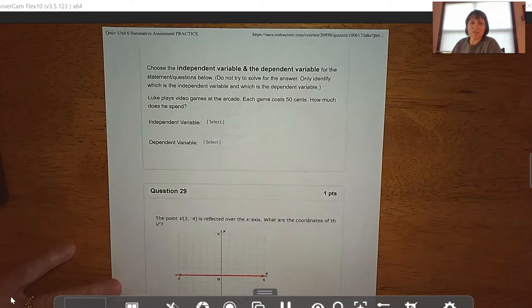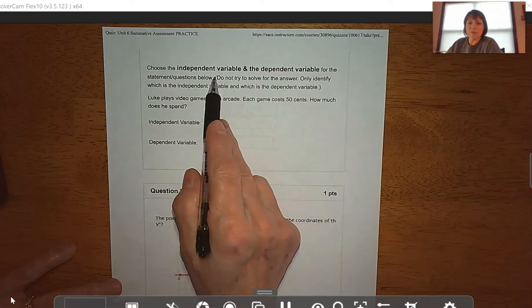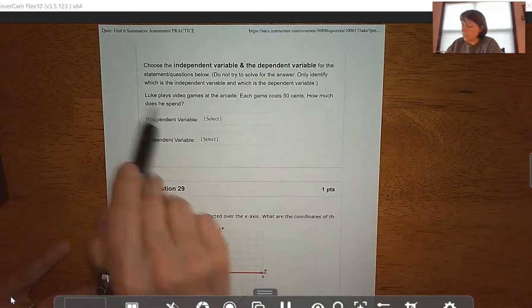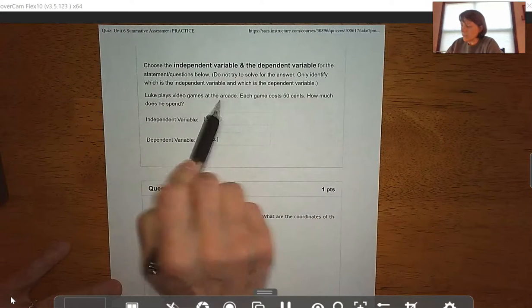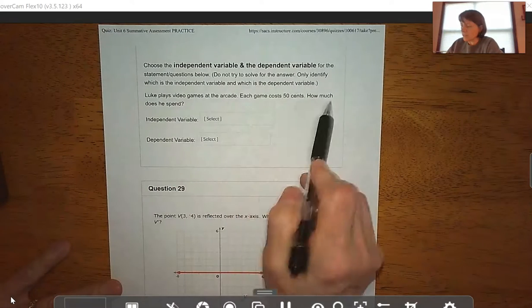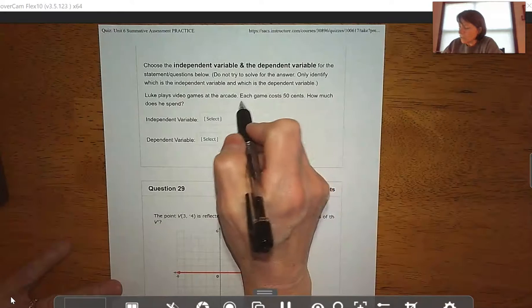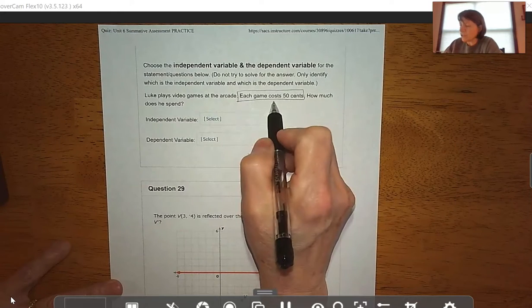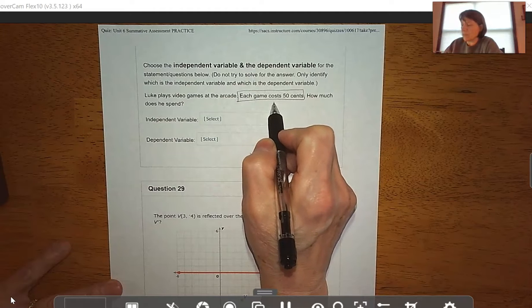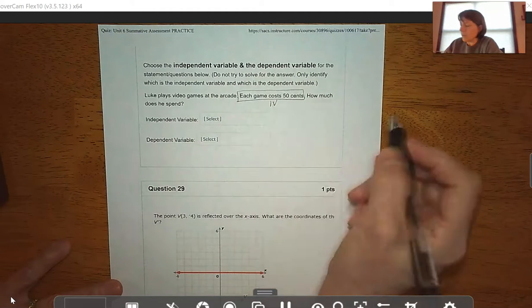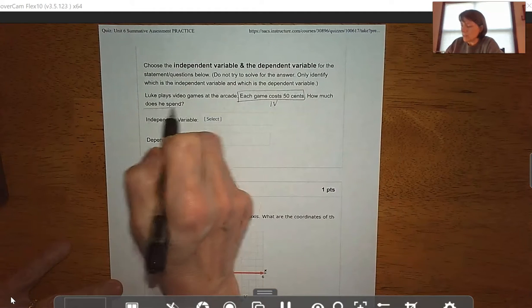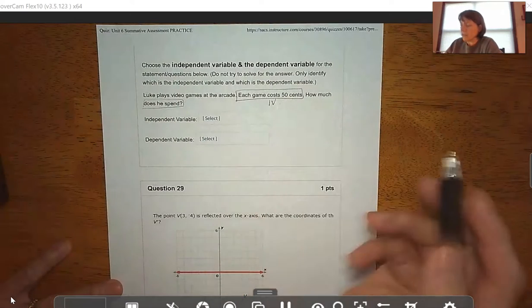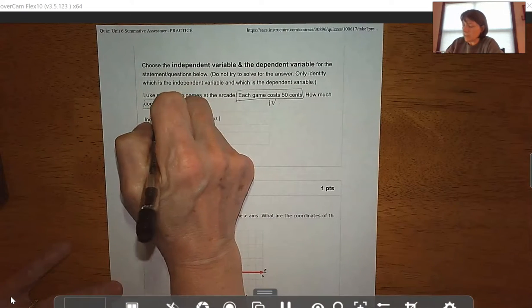Question 28. Luke plays video games at the arcade, each game costs 50 cents, how much does he spend? We know that every time he plays a game, he has to spend 50 cents. He gets to choose how many games he wants to play - that's our independent variable. And then how much he spends is determined by how many games he plays - that's our dependent variable.